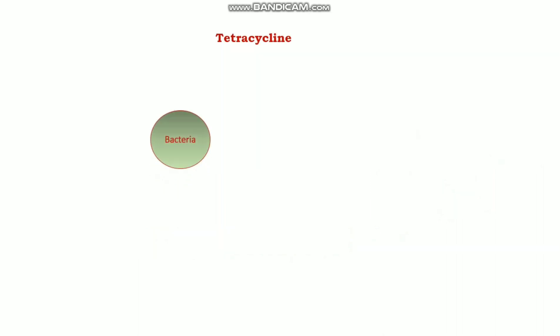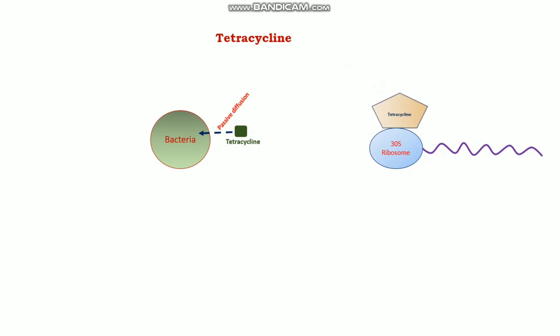Next is tetracycline. Tetracycline enters the bacterial cell by passive diffusion and then binds near the 30S ribosomal subunit. Aminoacyl tRNA normally binds to the 30S ribosomal subunit, but tetracycline blocks the position where aminoacyl tRNA binds. This way it eventually inhibits protein synthesis. This is the difference between tetracycline and macrolides.